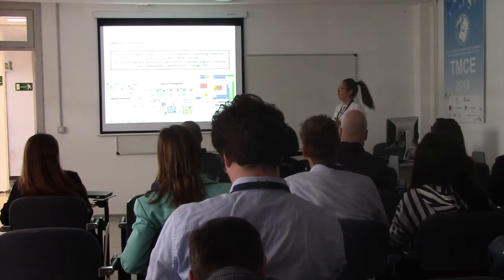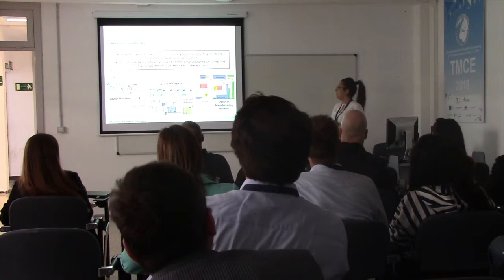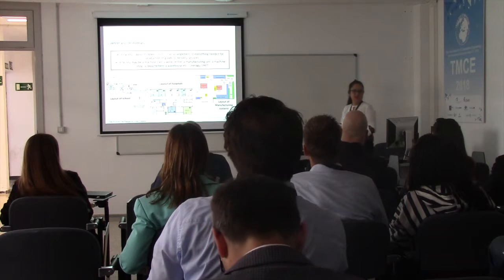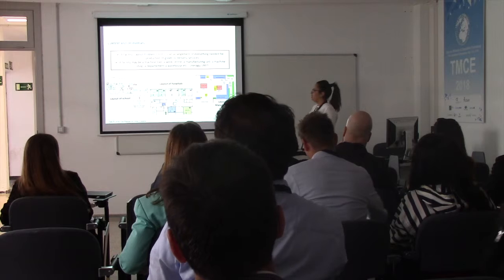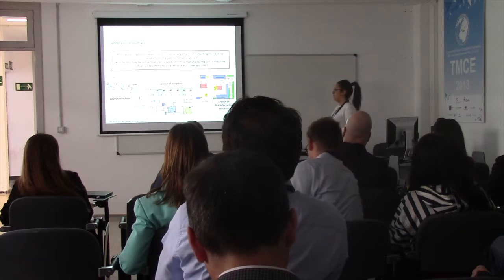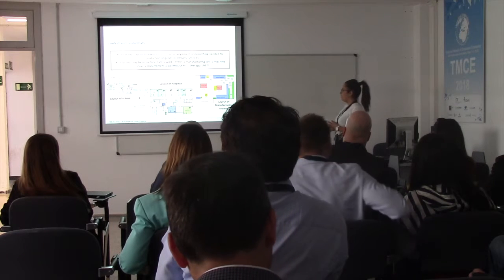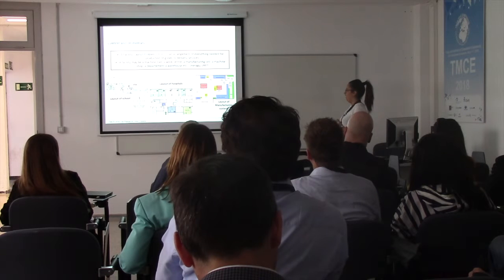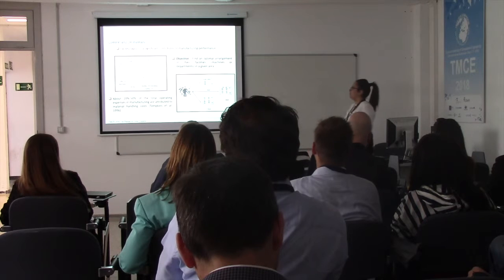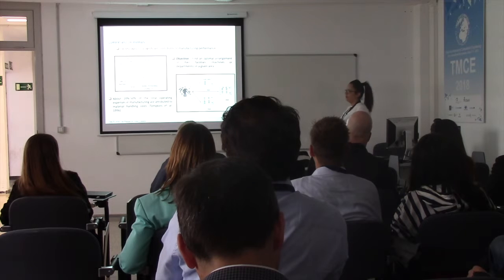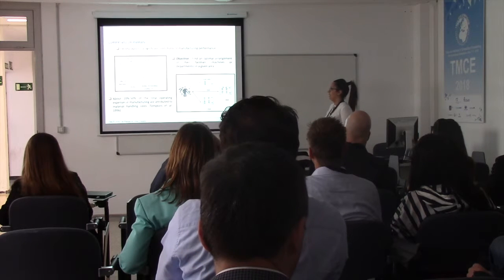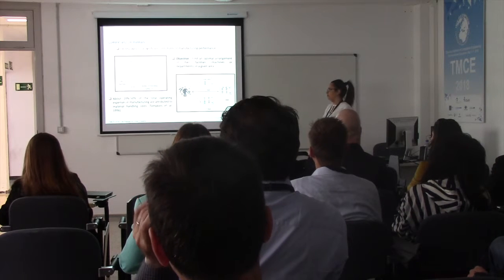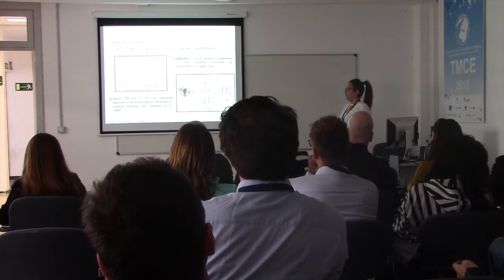First of all, we should know what facility layout problems means. Facility layout problems is an arrangement of everything needed for the production of goods or building services. A facility may be a machine tool, works under a machine, a department, or a warehouse. These problems have many applications in real-world situations including layout of schools, layout of hospitals, and layout of manufacturing systems. However, the main attractions of research in this area have been focused on the layout of manufacturing systems. As shown in this figure, only 5% of time is spent on machines and about 95% of time is spent on moving and waiting. And according to another study, about 20% to 50% of the total operating costs in manufacturing are attributed to material handling costs.